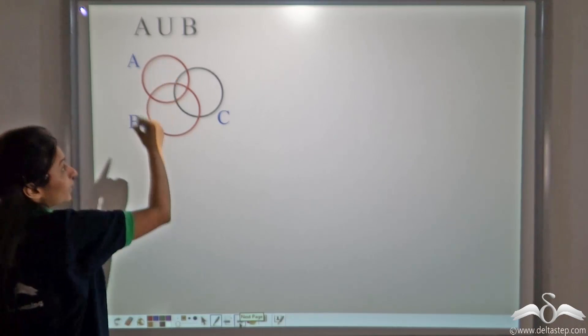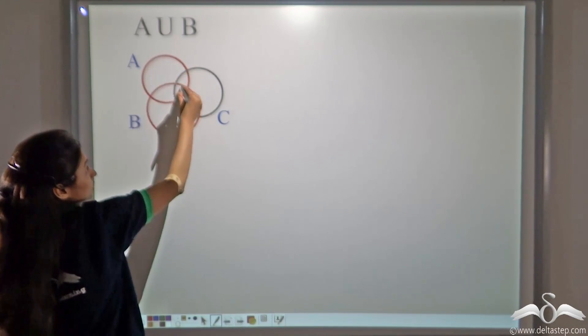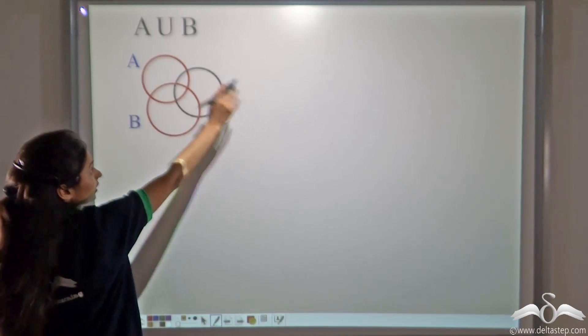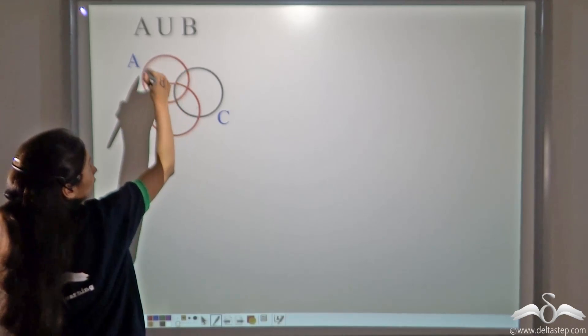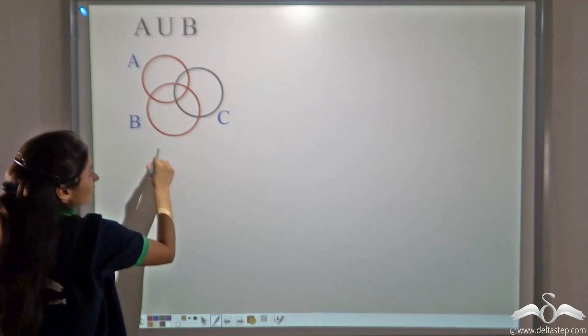A union B can be represented by these two circles. Forget about C. Just look at A and B. Uniting these two circles will give us A union B.